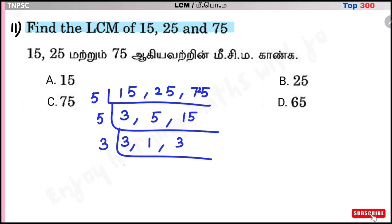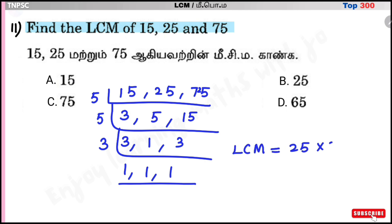Next, 3 table: 1, 3s are 3, and again 1, 3s are 3. LCM is equal to 25 into 3, that is equal to 75. Then the LCM is option C: 75.